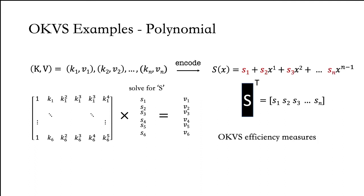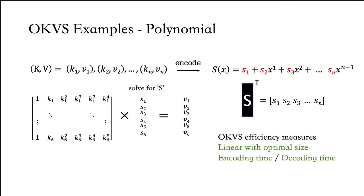What are the efficiency measures of a polynomial? Polynomials are optimal size: if we encode n key-value pairs, we obtain n coefficients. However, polynomials have the drawback that the encoding and decoding time for n values requires order n log² n field operations.